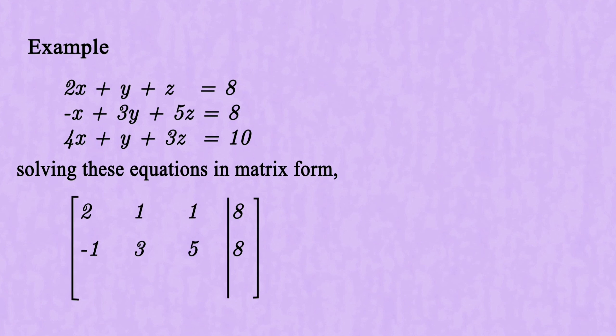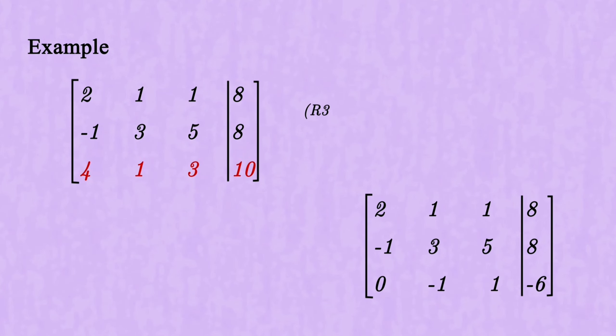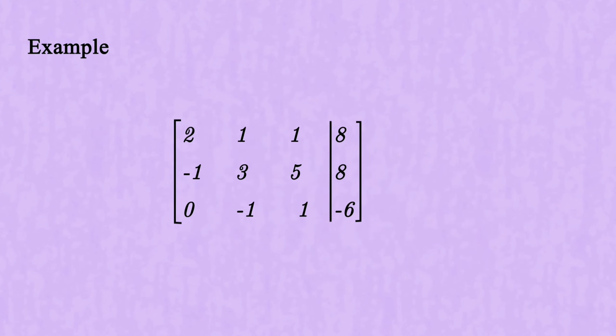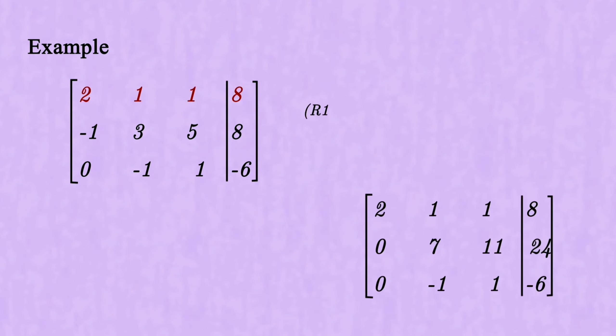Example. Solving these equations in matrix form. Row 3 minus row 1 multiplied by 2 applied to row 3. Row 1 plus row 2 multiplied by 2 applied to row 2.